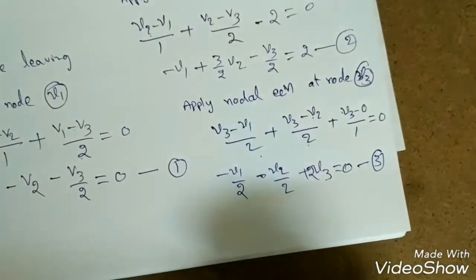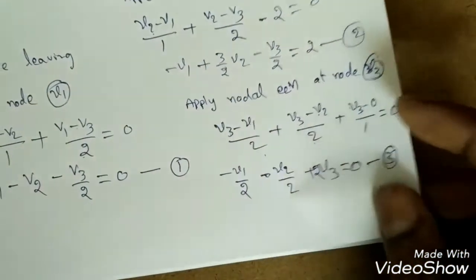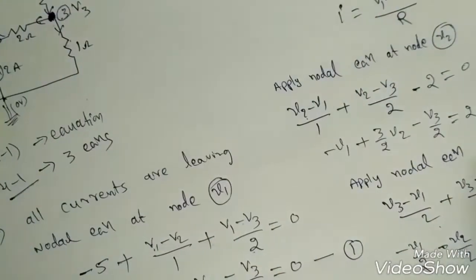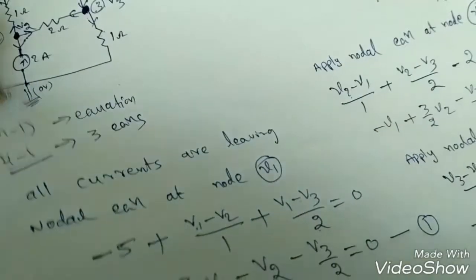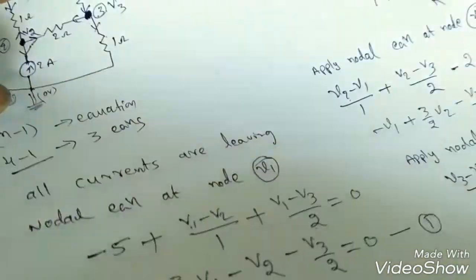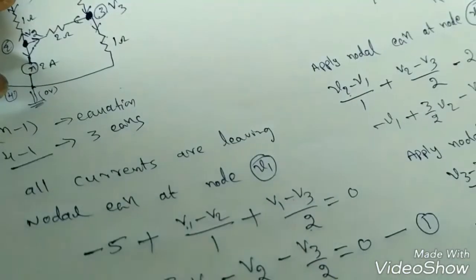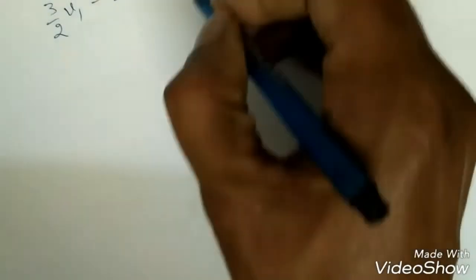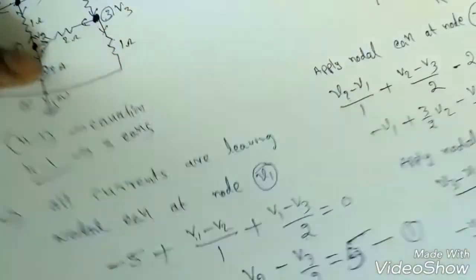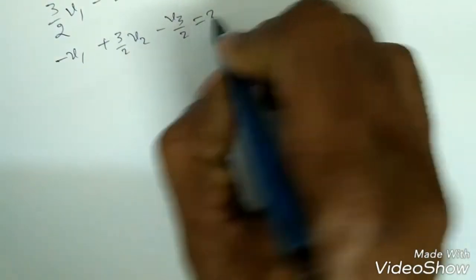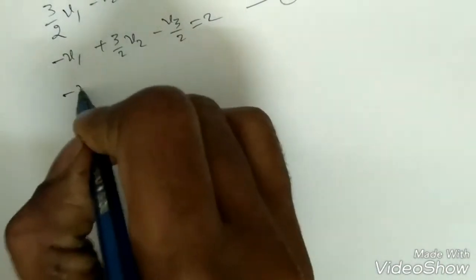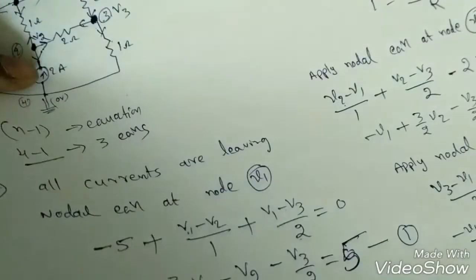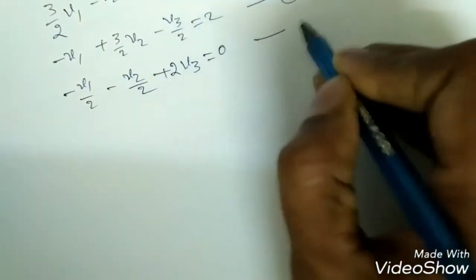So we have rearranged all three equations. Equation 1: (3/2)V1 minus V2 minus V3/2 equals 5. Equation 2: minus V1 plus (3/2)V2 minus V3/2 equals 2. Equation 3: minus V1/2 minus V2/2 plus 2V3 equals 0. We now solve these three equations to find V1, V2, and V3.